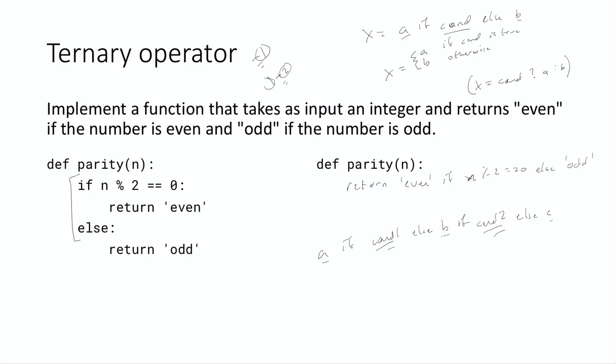So for example, if the problem we're asking, given a number return positive, negative, or zero, depending on the number, you could basically say you could return the string positive if the number is greater than zero, else negative if the number is less than zero, else the string zero. And that would handle for all three of those conditions.